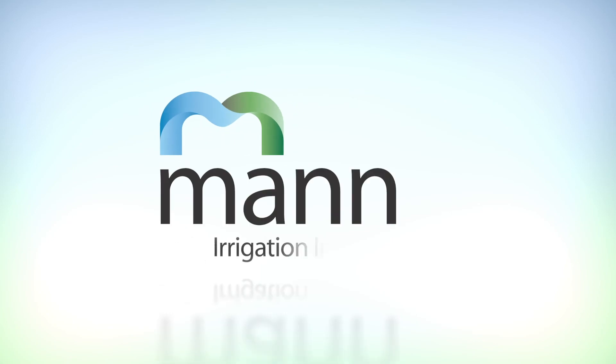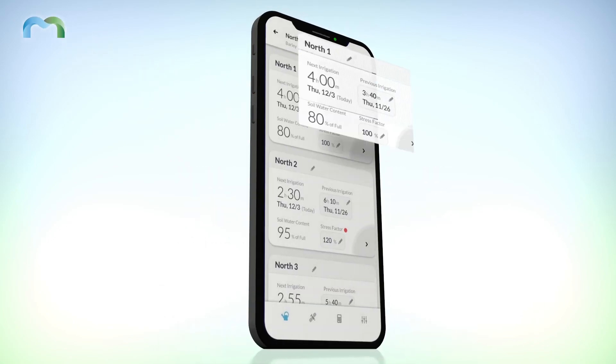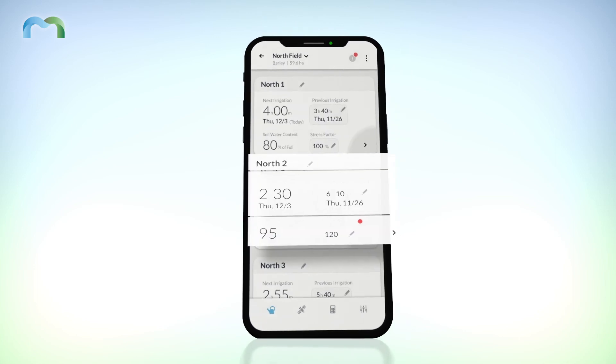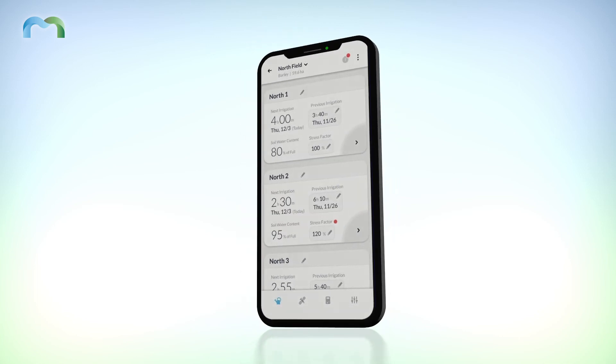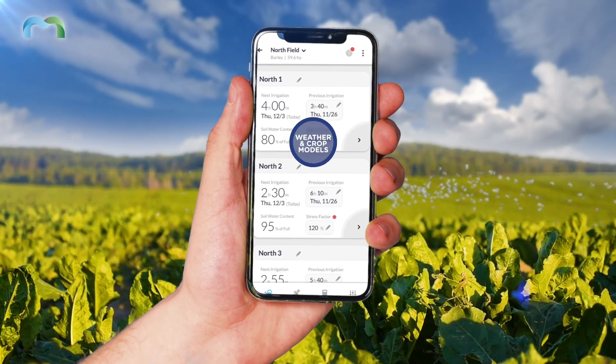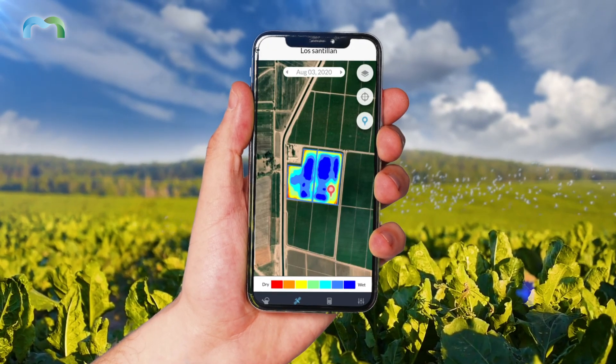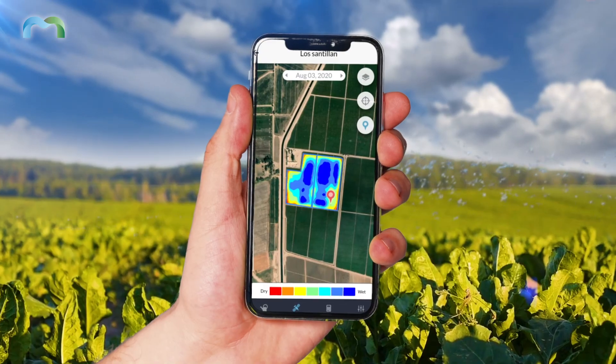MANA Irrigation's pioneering irrigation scheduling technology provides daily, field-specific, hyper-local recommendations without the need for in-field hardware. Combining remote sensing, weather, and crop models, MANA measures the crop's actual water usage and needs.